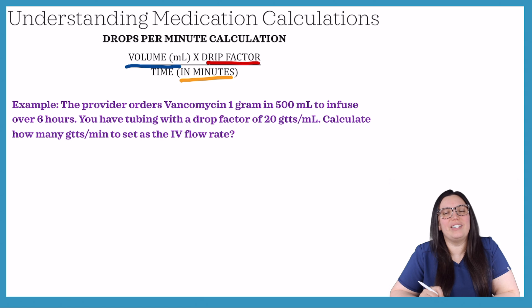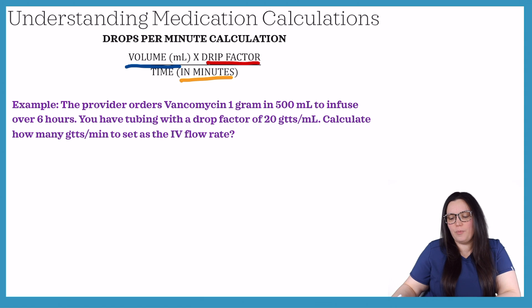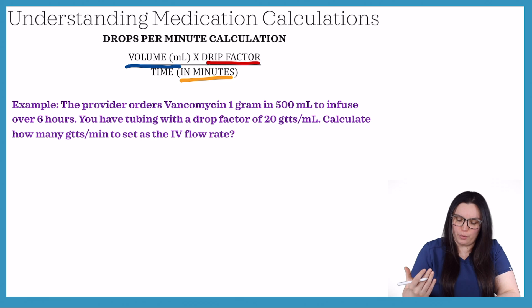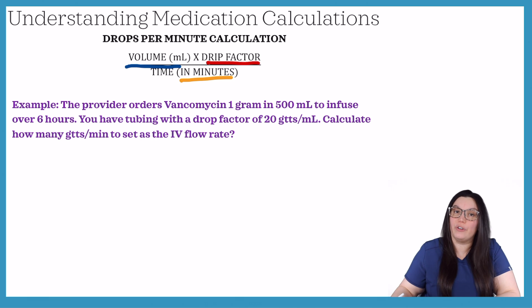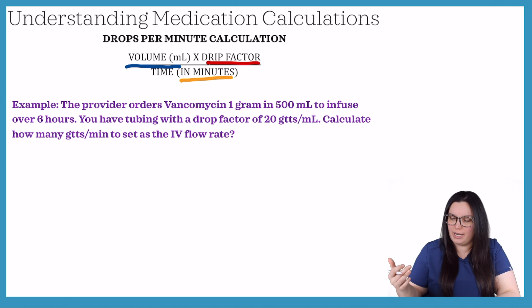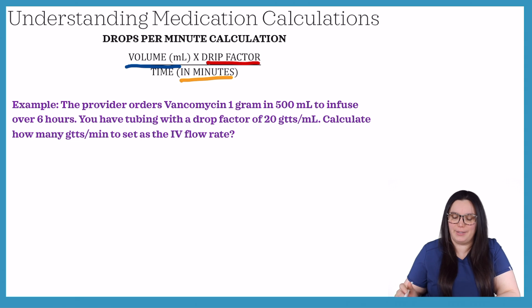Our next example: the provider orders vancomycin one gram in 500 mL to infuse over six hours. You have tubing with a drop factor of 20, and we need to calculate how many drops per minute to set the IV flow rate.